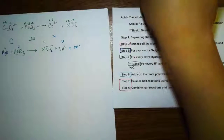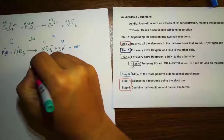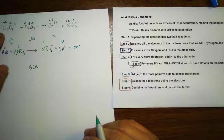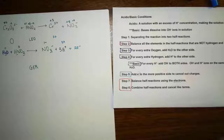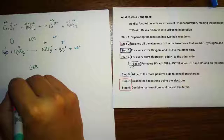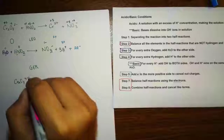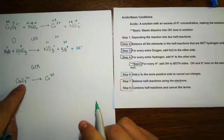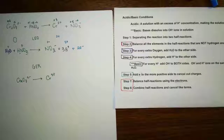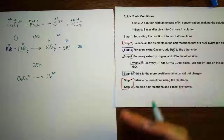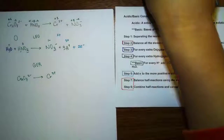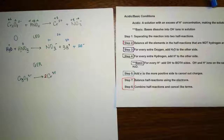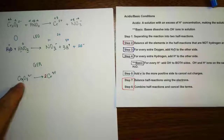Now the GER part — the reduction. Which element becomes more negative? Looking back: Cr goes from +6 to +3 — becoming more negative. So the reduction half-reaction is Cr₂O₇²⁻ going to Cr³⁺. Note that in this reaction we copy down the entire compound. Step 2: balance all elements other than H and O. We have 2 chromium in Cr₂O₇²⁻, so we need 2 Cr³⁺ on the product side.